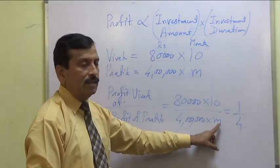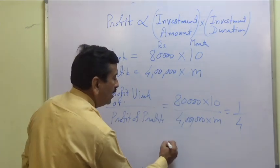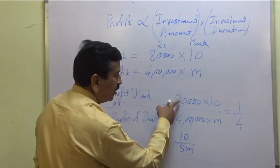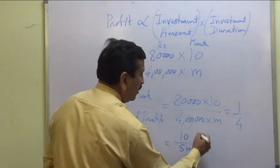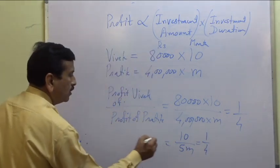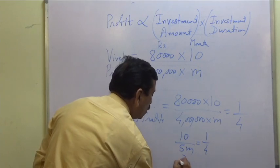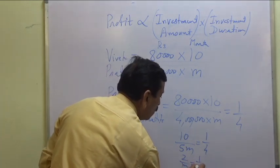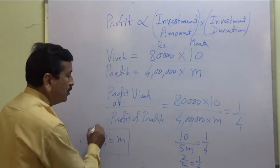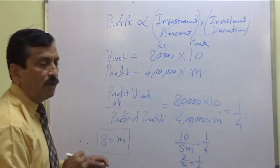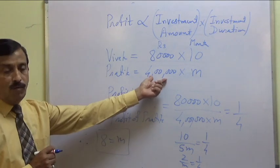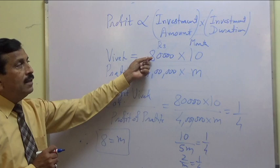Simplifying: 80,000 divided by 4 lakhs gives one-fifth, so we get 10 divided by 5M equals 1 by 4. That simplifies to 2 by M equals 1 by 4, and therefore M equals 8. Pratik was in business for 8 months with 4 lakhs, while Vivek invested 80,000 for 10 months.